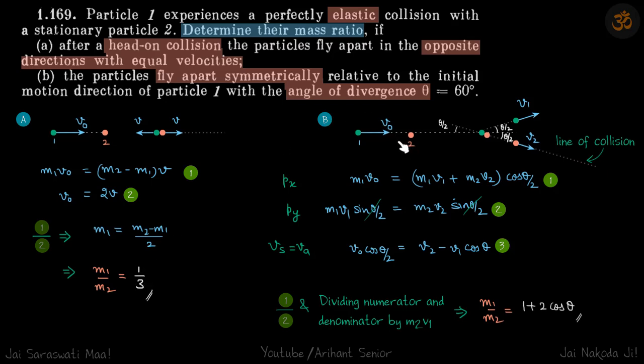For the second case, we'll have an extra term of θ, so we'll need three equations. Two equations come from momentum conservation in the x direction and velocity of approach equals velocity of separation. The third equation comes from conserving momentum in the y direction.